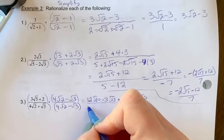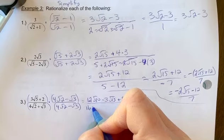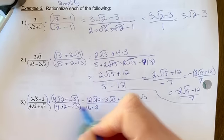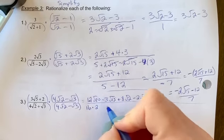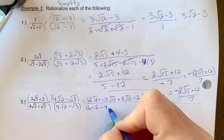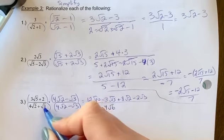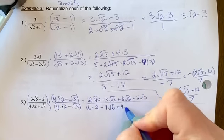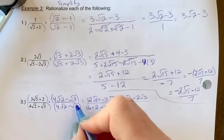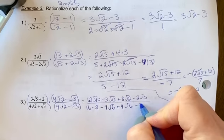FOIL the denominator, so 16 times 2, so that's first, outside minus 4 root 6, inside will be plus 4 root 6, last will be minus 3.